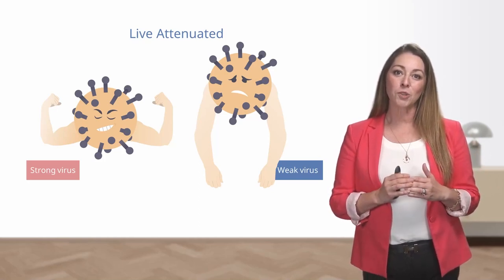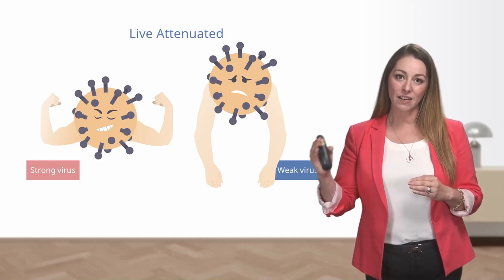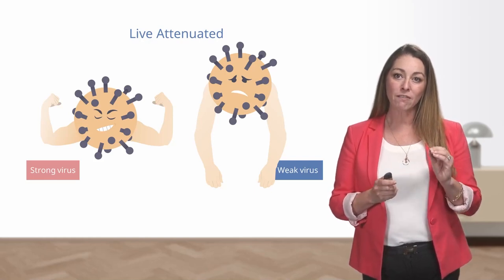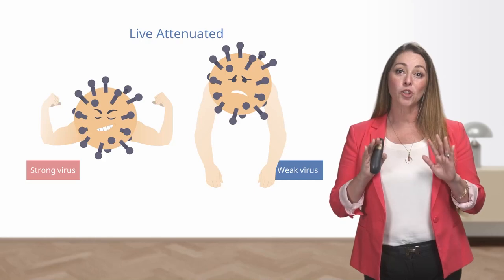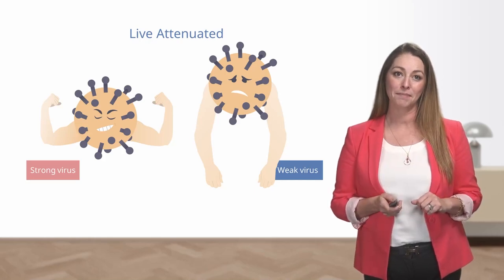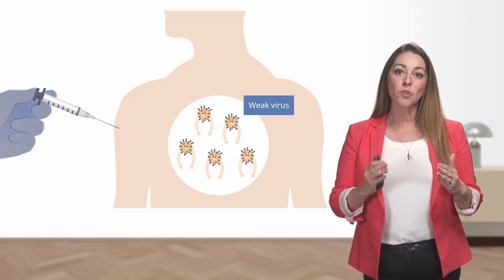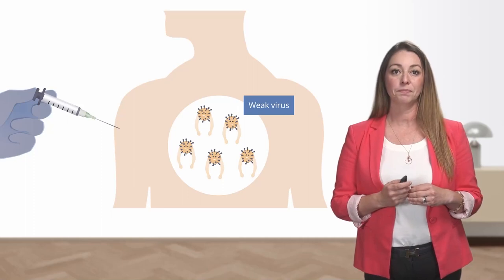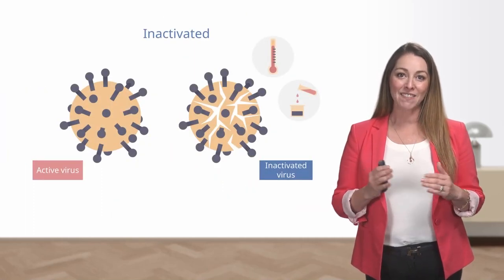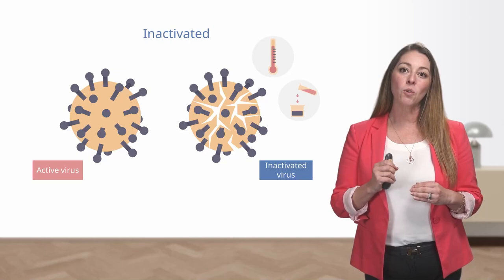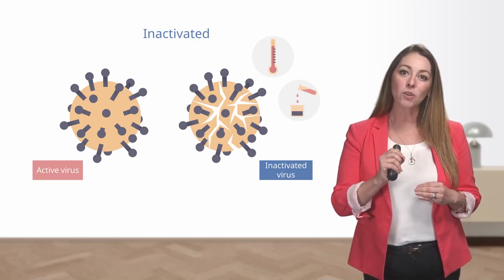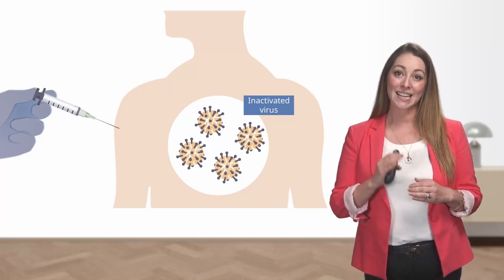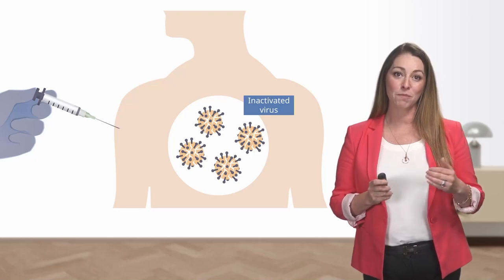Most vaccines are developed using either a live organism or an inactivated form of the organism. Live attenuated vaccines are made from weakened virus organisms that can still replicate but are too weak to make a person ill. This initiates an immune response and the individual builds immunity against the virus for future exposure. Inactivated vaccines are made from viral organisms that have been inactivated by either chemicals or by heat. The viruses in inactivated vaccines cannot replicate; however, they still initiate that immune response.